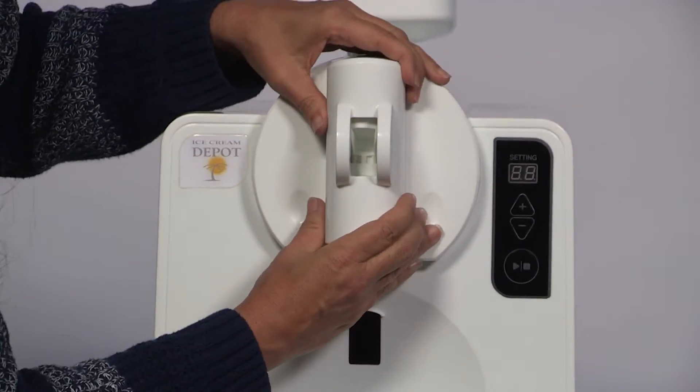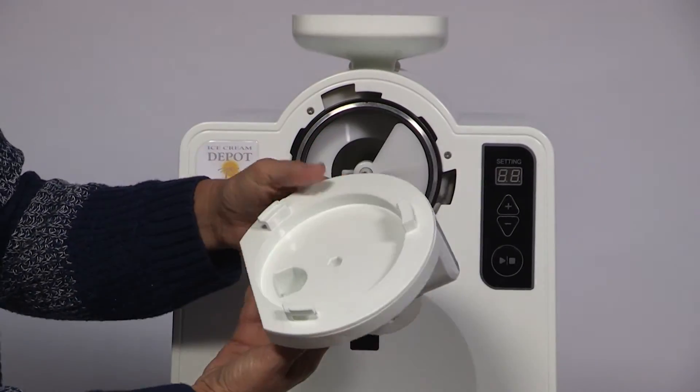Now, twist the dispense head counter-clockwise and remove it from the machine.